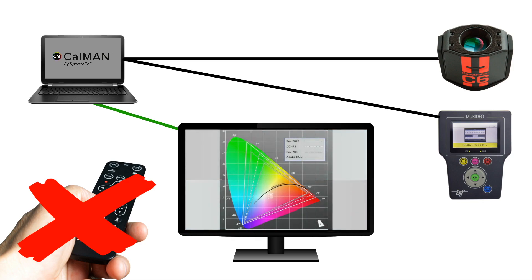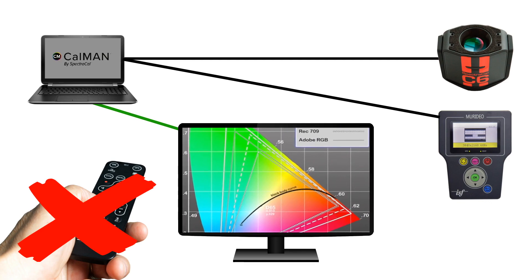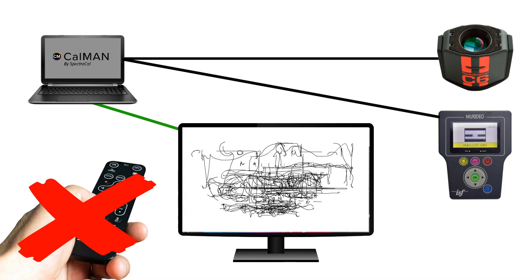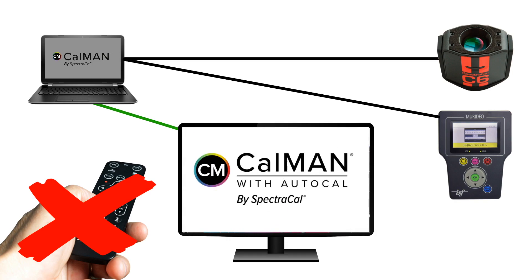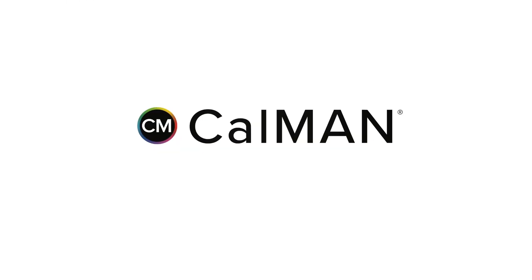Calman simplifies time-consuming tasks such as grayscale and color management by taking control of the display, ensuring the calibration process is followed as efficiently as possible. To take advantage of the Auto Cal feature, make sure you look for displays which carry the Calman Ready certification.